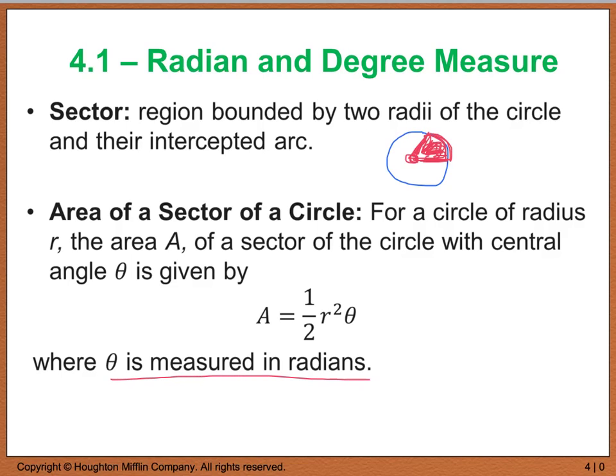Now, we can calculate the area of that sector by A equals 1 half R squared theta. And again, theta is measured in radians. This is a very important formula that you must know, as it will not be given to you on a test or a quiz.